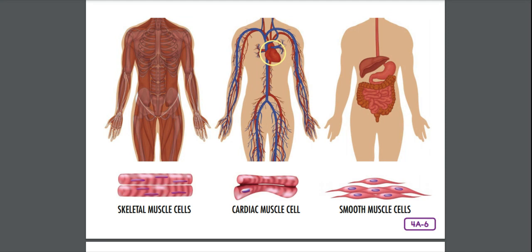Here's a riddle: I am a muscle, and like music I have rhythm and a beat. I am protected by the rib cage. What am I? Your thick, powerful heart is made of cardiac muscle — the strongest muscle in your whole body, found only in your heart.